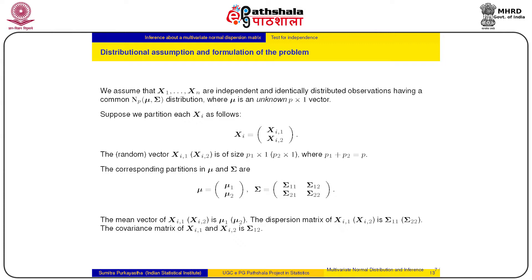What are the corresponding partitions of mu and sigma? Now that the original vector x1 has mean vector mu and dispersion matrix sigma, it is natural to ask about the corresponding means of xi1, xi2 and their dispersion matrices. We introduce the same partition: the first p1 many coordinates of mu give mu1, the next p2 many give mu2. For sigma, the sub-matrix of size p1 cross p1 is sigma11, sigma12 is of size p1 cross p2, and so on.